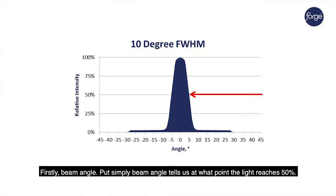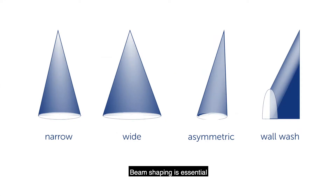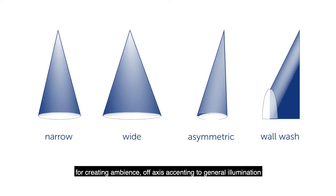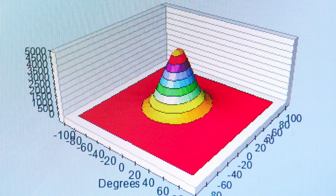Firstly, beam angle. Put simply, beam angle tells us at what point the light reaches 50 percent. When putting light where you need it, beam shaping is essential — from creating ambience to general illumination, the beam shape does it all.